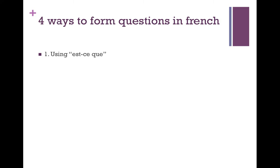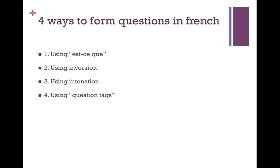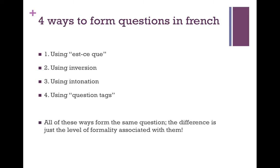Once we know how to write our sentences with the proper verb, there are four ways to form these into questions in French. We're just going to briefly go over what those four are before I explain each one. The first one is using a phrase called est-ce que. The second way is to use something called inversion. The third is intonation. And the fourth is to use question tags. These are all forming the same questions — whether you use est-ce que, intonation, inversion, or question tags, it'll have the same meaning and translate the same way. The difference is just how formal each one is.